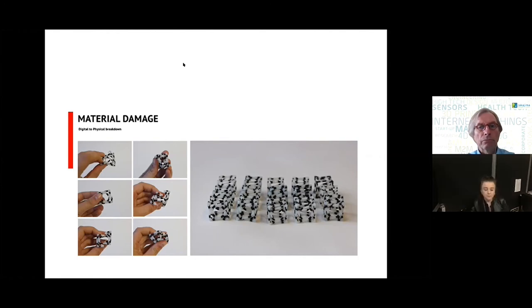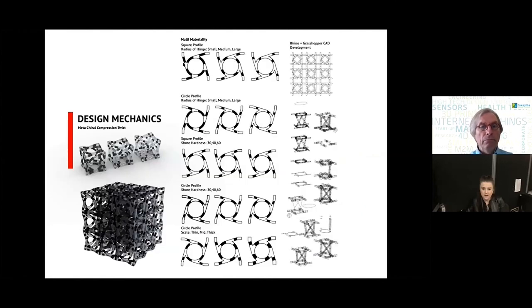So this is the metachiral compression twist. We chose this primarily because it is biaxial and it is three-dimensional so it can be multi-dimensional printed and we can demonstrate a biaxial movement with a single unit. So a range of design parameters have been experimented with and then selected: the square profile, the shore hardness and the scale etc. And so you can see on the right the Rhino and Grasshopper CAD development. So primarily the structures are developed in Rhino so that we can apply all of the mechanical restrictions to the unit cells.